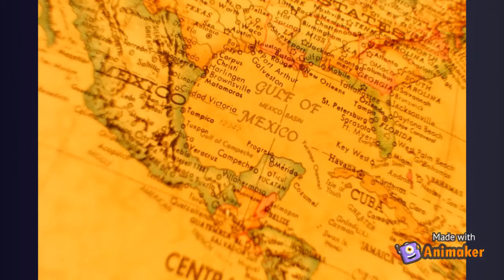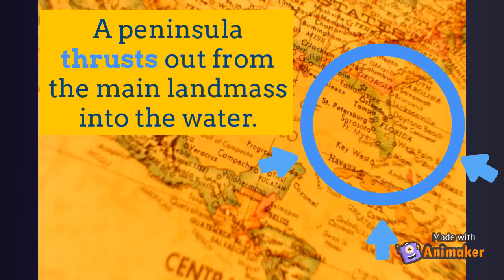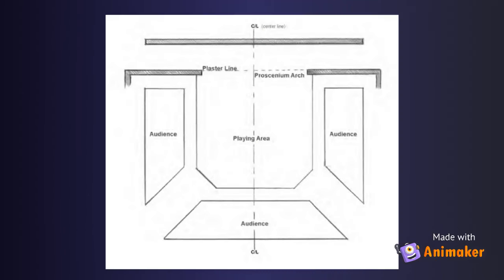For our next type of stage, think of Florida. Florida is a peninsula surrounded on three sides by water — the fourth side is good old Georgia. A peninsula thrusts out from the mainland mass into the water, and that is exactly what to expect from a thrust stage. A thrust stage is surrounded by audience members on three sides. Designers must be careful to avoid blocking any audience member's view with large scenery by placing it farther upstage.